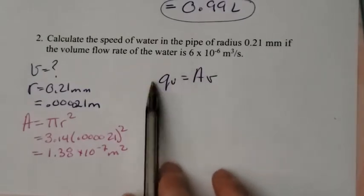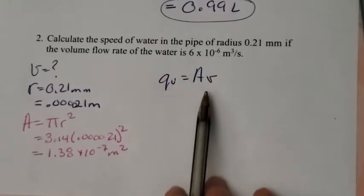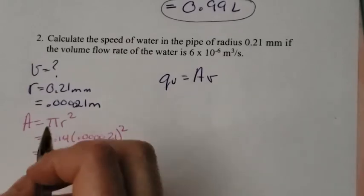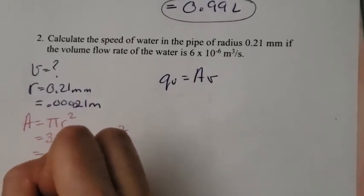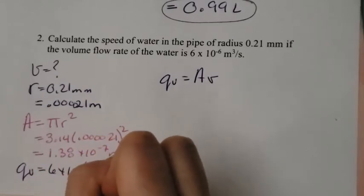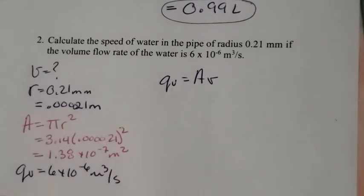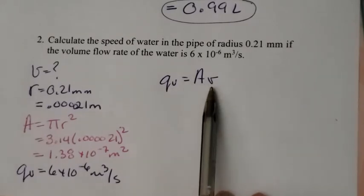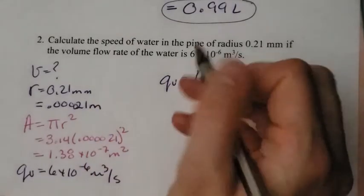When I go back to my formula, I want to rearrange this for speed. I can't forget I also have my flow rate, so QV is 6 times 10 to the negative 6 meters cubed per second. Now I'm going to get speed all by itself. To get speed all by itself, I have to divide both sides by A. The A's cancel out.